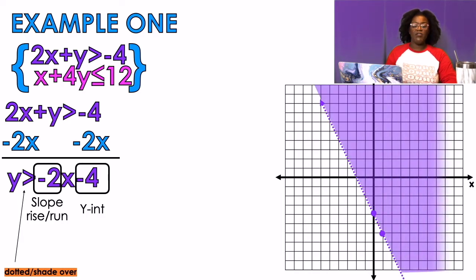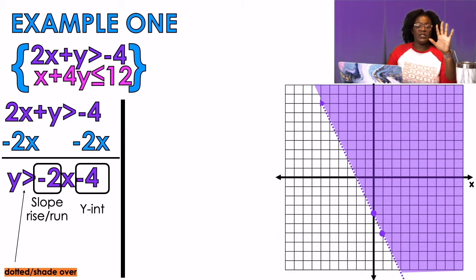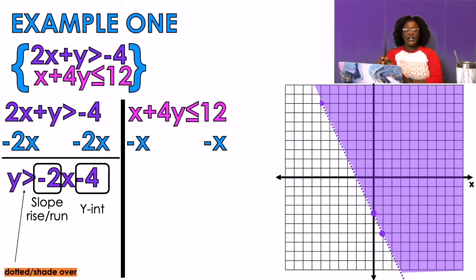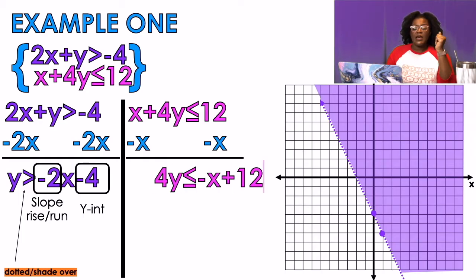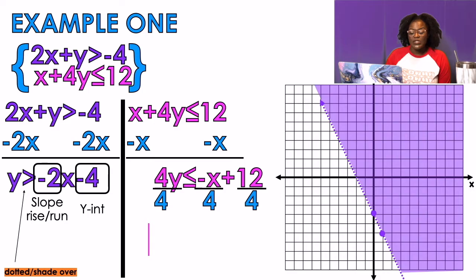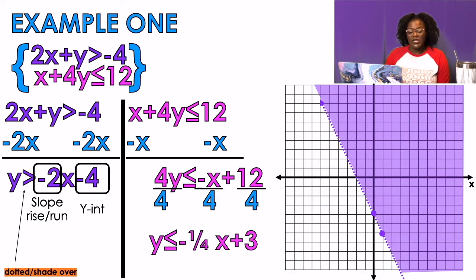The last step is to repeat. For the second equation, x + 4y ≤ 12, I get y by itself. Subtracting x from both sides gives 4y ≤ -x + 12. Dividing everything by 4 gives y ≤ -¼x + 3.